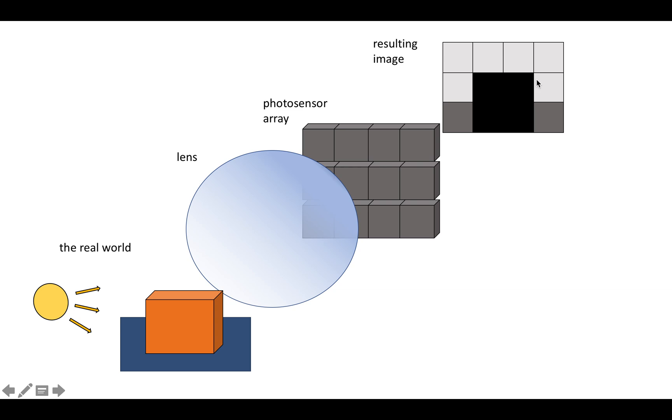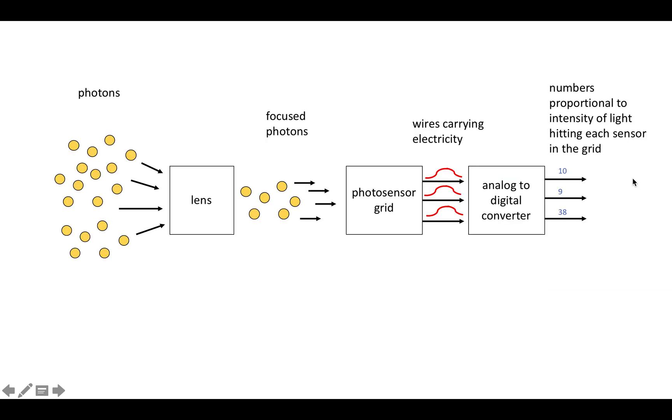And this is the basic pipeline behind digital cameras. You have a bunch of photons coming in from the real world. They're focused by a lens. These focused photons hit a grid of photosensors arranged in 2D, and then a bunch of wires carrying electricity representing the intensity of light hitting each photosensor in the grid come out. Those are sent to an analog-to-digital converter, and the analog-to-digital converter emits numbers that are proportional to the intensity of light hitting each sensor in the grid. And these numbers are really grayscale pixels.